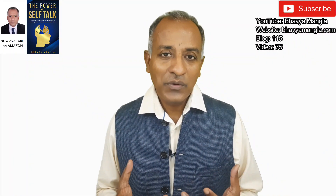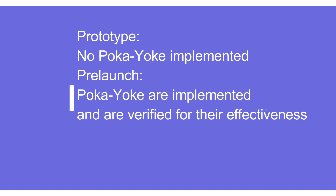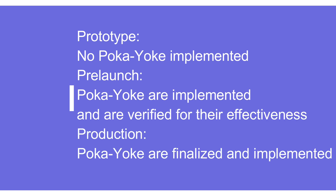There is no need for any poka-yoke in the prototype control plan, but in the pre-launch and production control plan, poka-yokes are required. Sometimes during the pre-launch stage when we are doing trial production, we may add some new poka-yoke depending on the requirement.